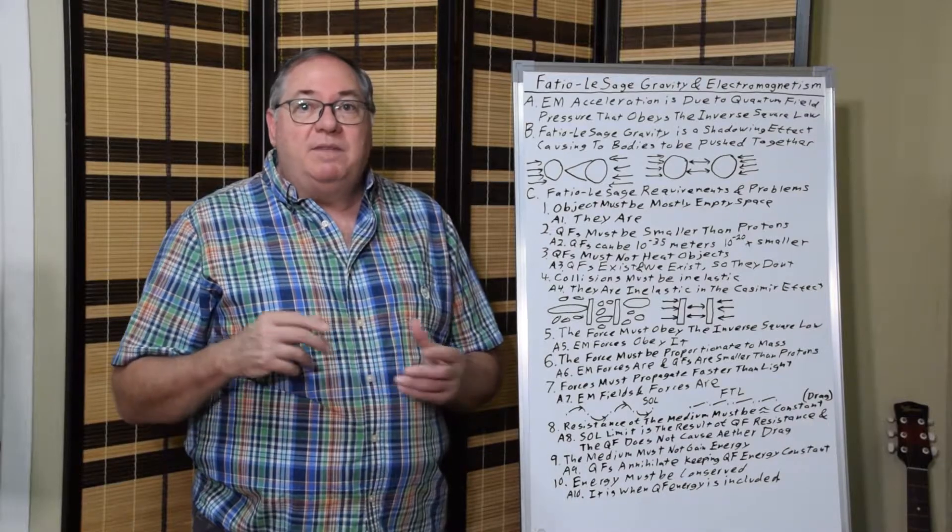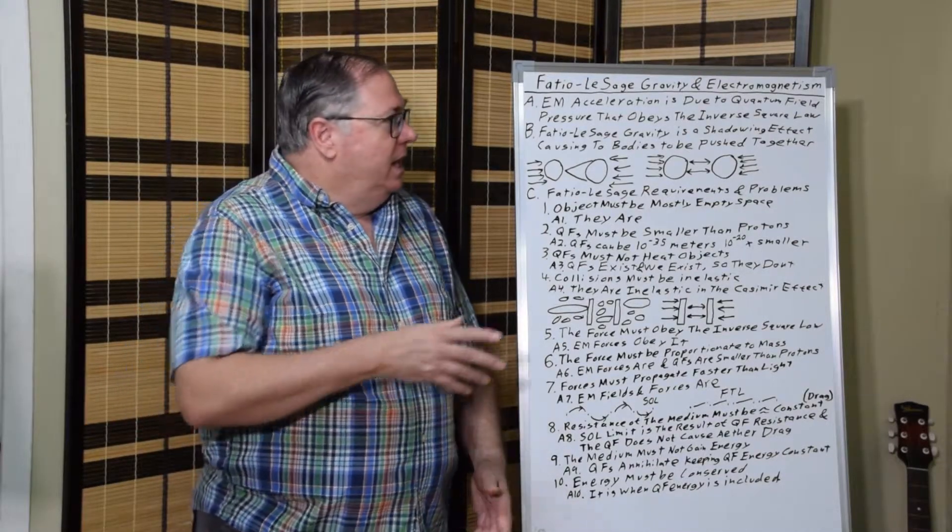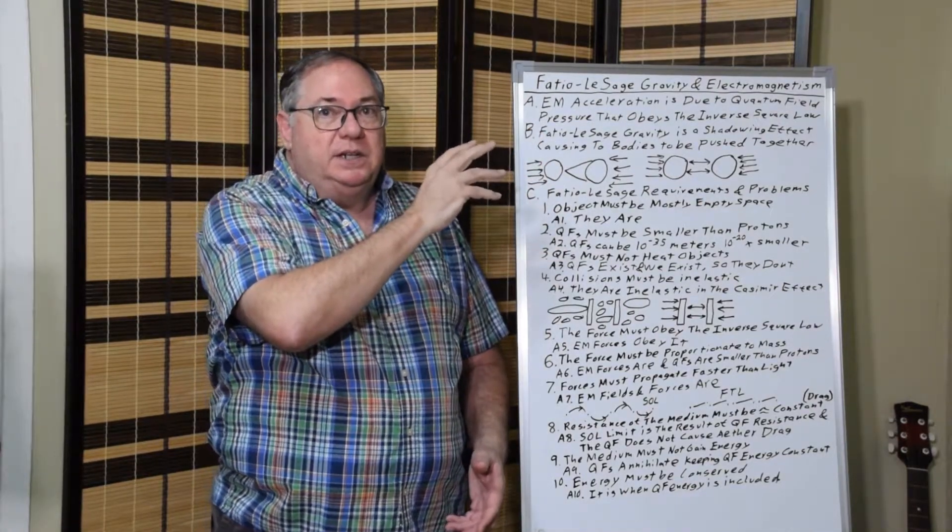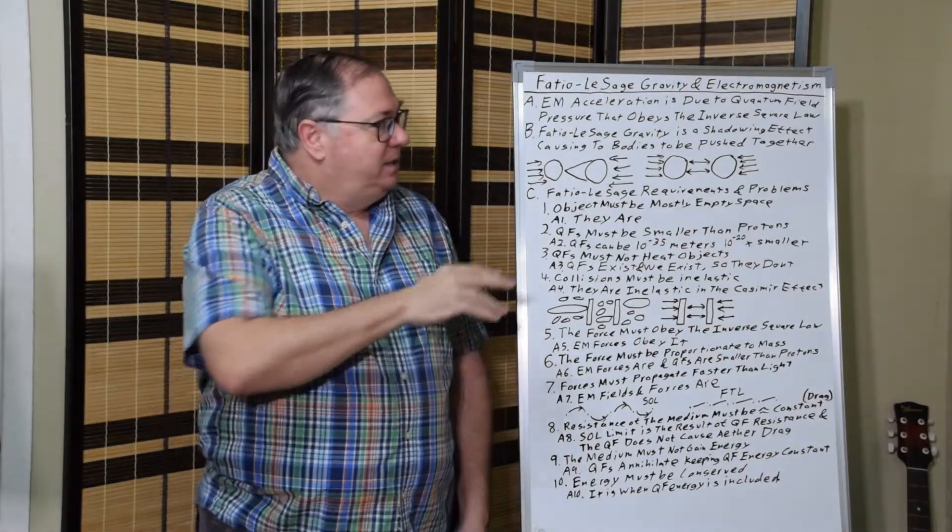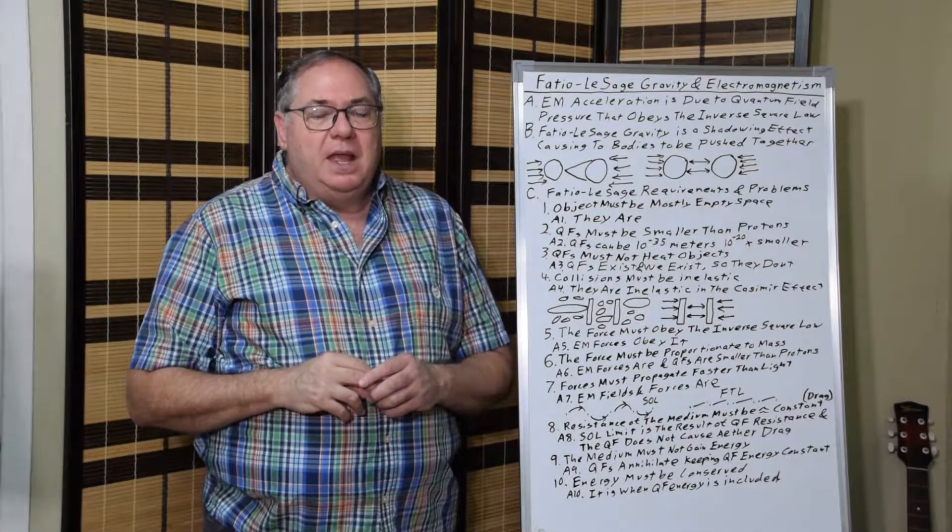When you calculate the force in order to get the acceleration, you have to have force equals mass times acceleration. So you have to have the mass in the equation. So this force that causes electromagnetic acceleration is proportional to mass, meaning it satisfies the other size requirement.